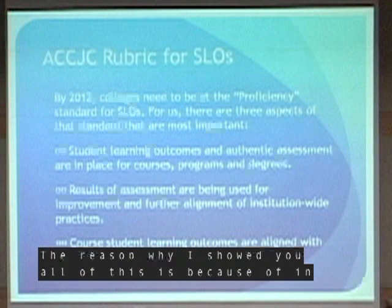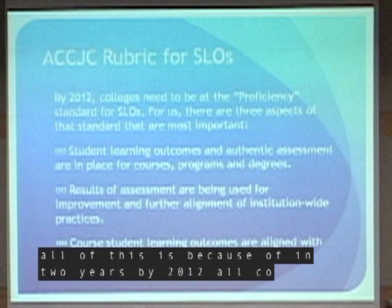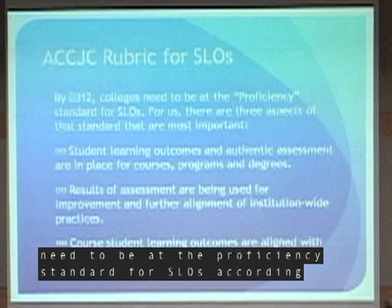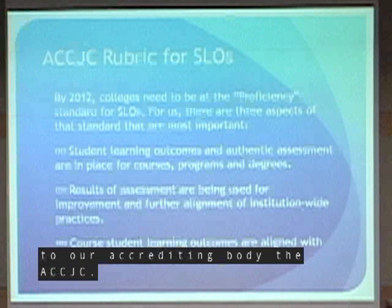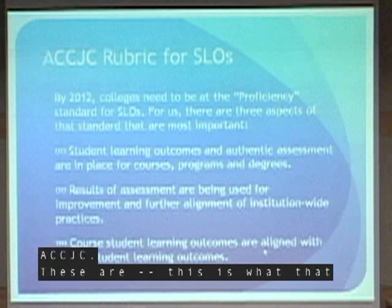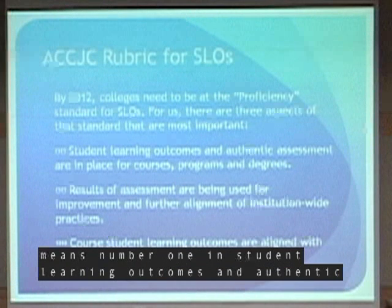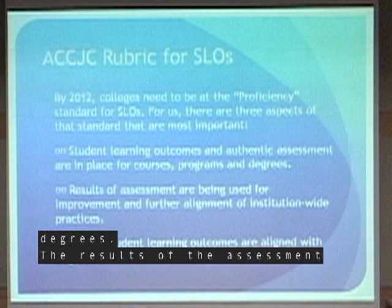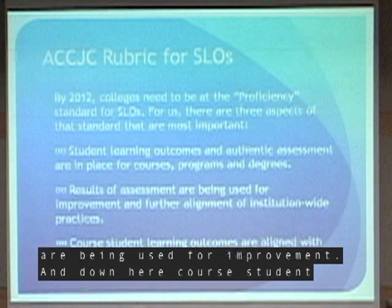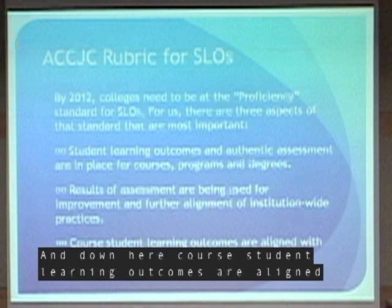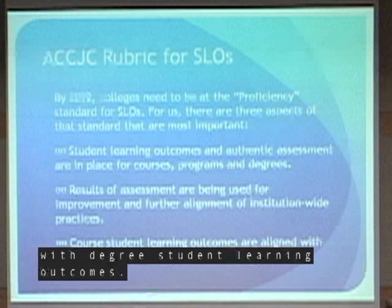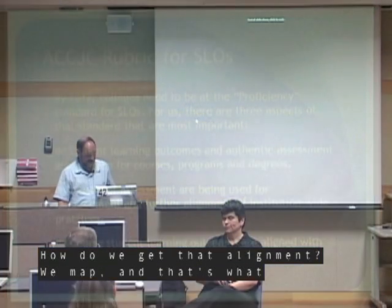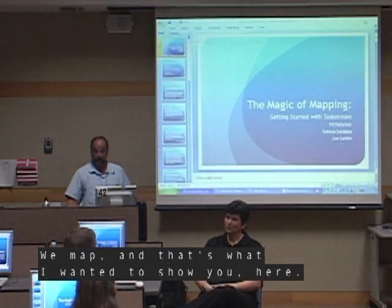The reason I showed you all of this is because in two years, by 2012, all colleges need to be at the proficiency standard for SLOs according to our accrediting body, the ACCJC. This means: student learning outcomes and authentic assessment are in place for courses, programs, and degrees; the results of assessment are being used for improvement; and course student learning outcomes are aligned with degree student learning outcomes. How do we get that alignment? We map.